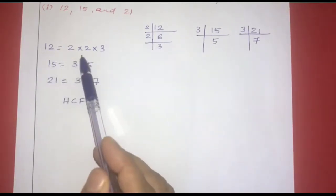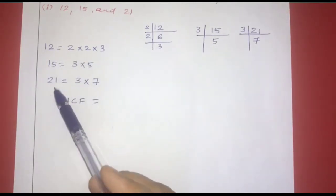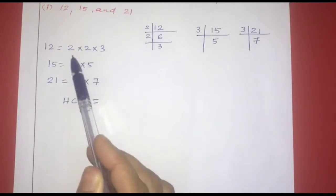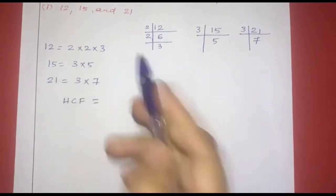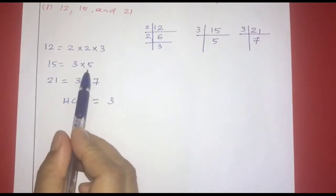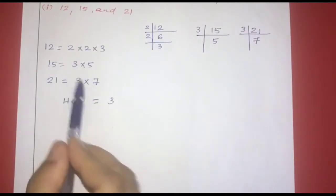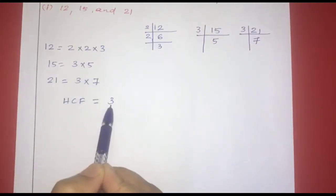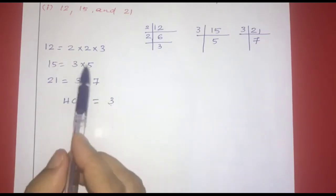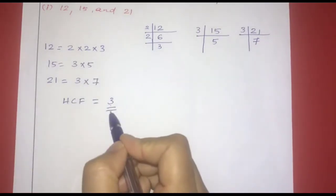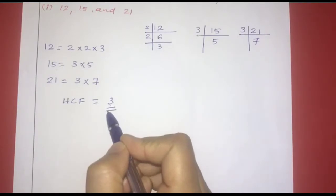Looking at common factors: 2 appears in 12 but not in 15 or 21. The factor 3 appears in 12, 15, and 21. The factor 5 appears only in 15, and 7 only in 21. So 3 is the only common factor, and 3 is the smallest — and highest — common power.